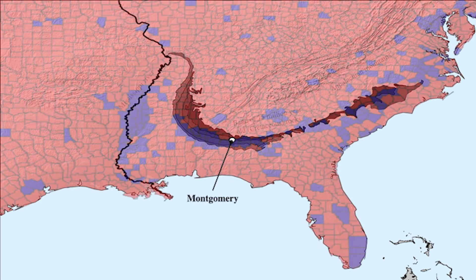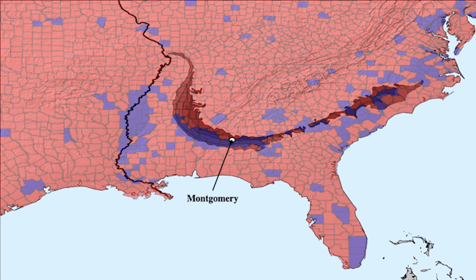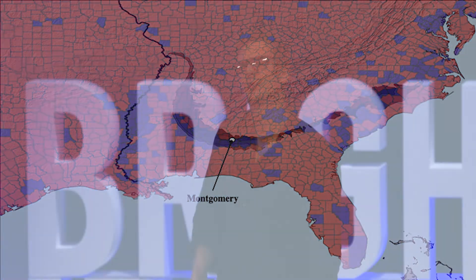And if I lay the political map back on top of this, you can see there's an astonishing correlation between people choosing to vote for the Democrats and rocks beneath your feet which are 75 million years old.